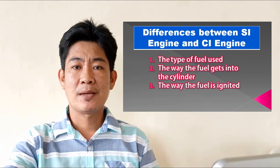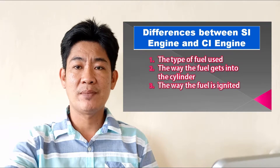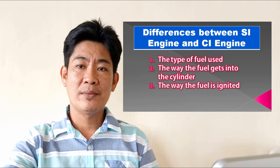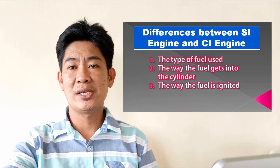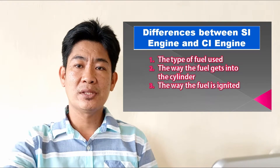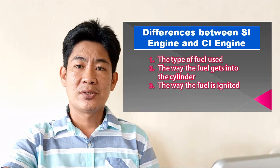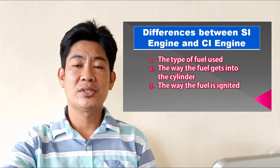Hello everyone. In today's video we will discuss the difference between the spark ignition engine and the compression ignition engine. We have two types of engines used in automobiles: first is the spark ignition engine, which we also call the gasoline engine, and the other is the compression ignition engine, or what we call the diesel engine. There are three major differences between them.